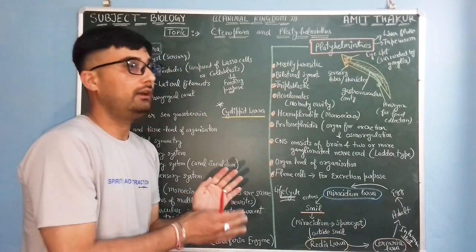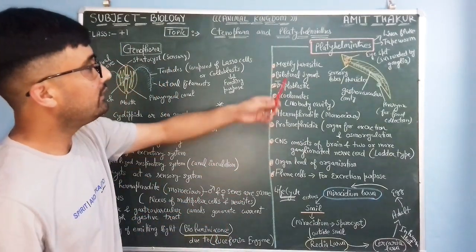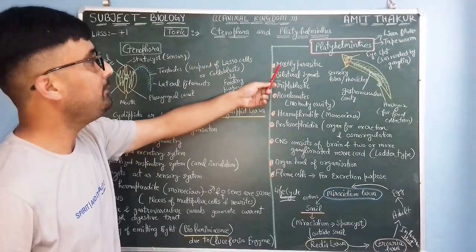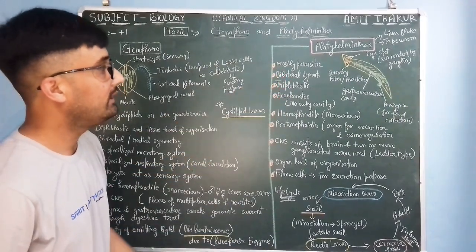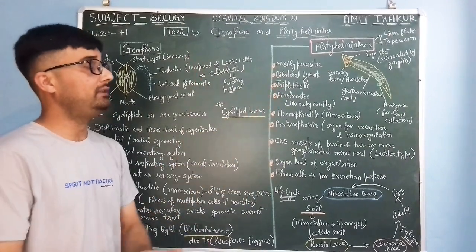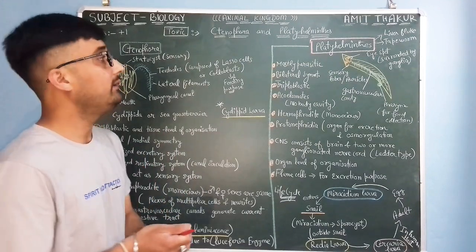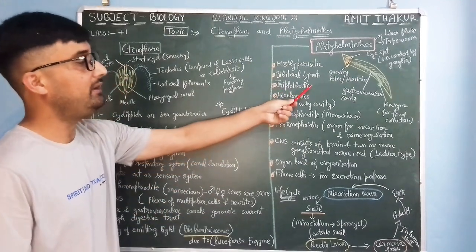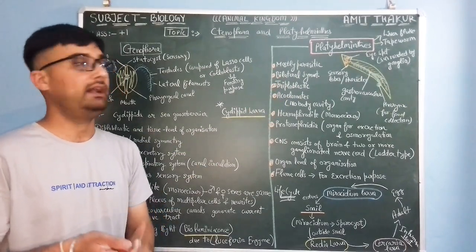So there are some points which are very important in case of Platyhelminthes. They are mostly parasitic, they have bilateral symmetry, they are triploblastic, it is very important. Platyhelminthes, they are the first animals who are triploblastic, means three germinal layers: ectoderm, mesoderm and endoderm.